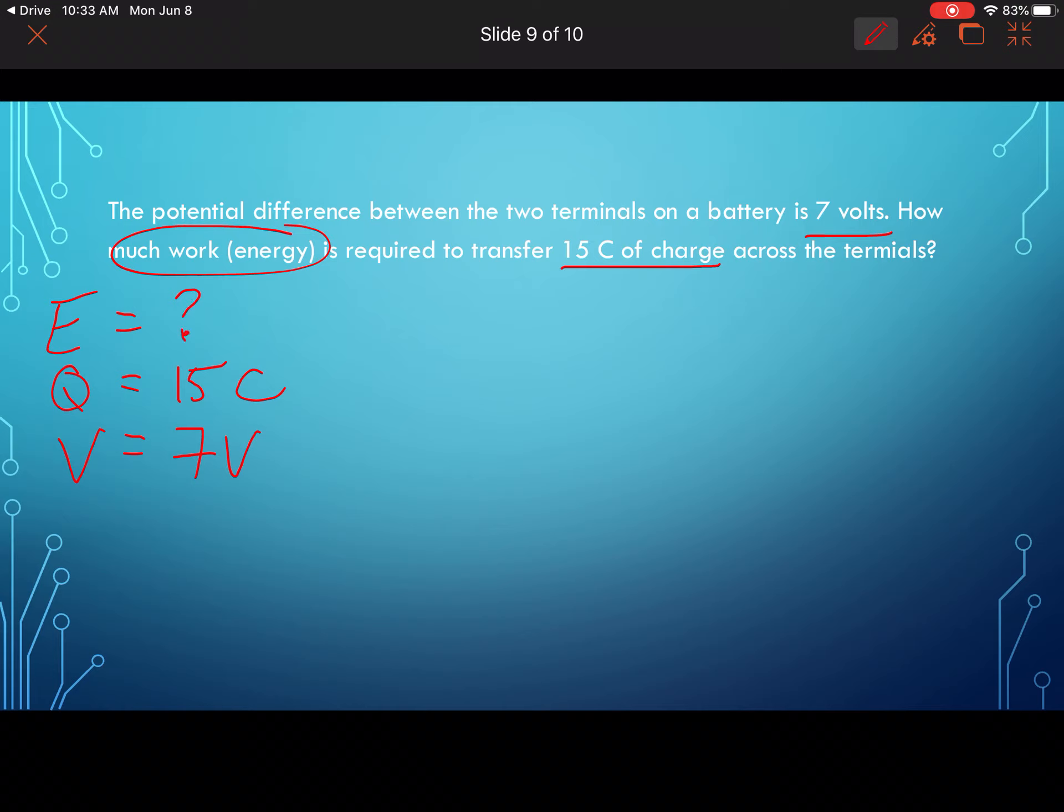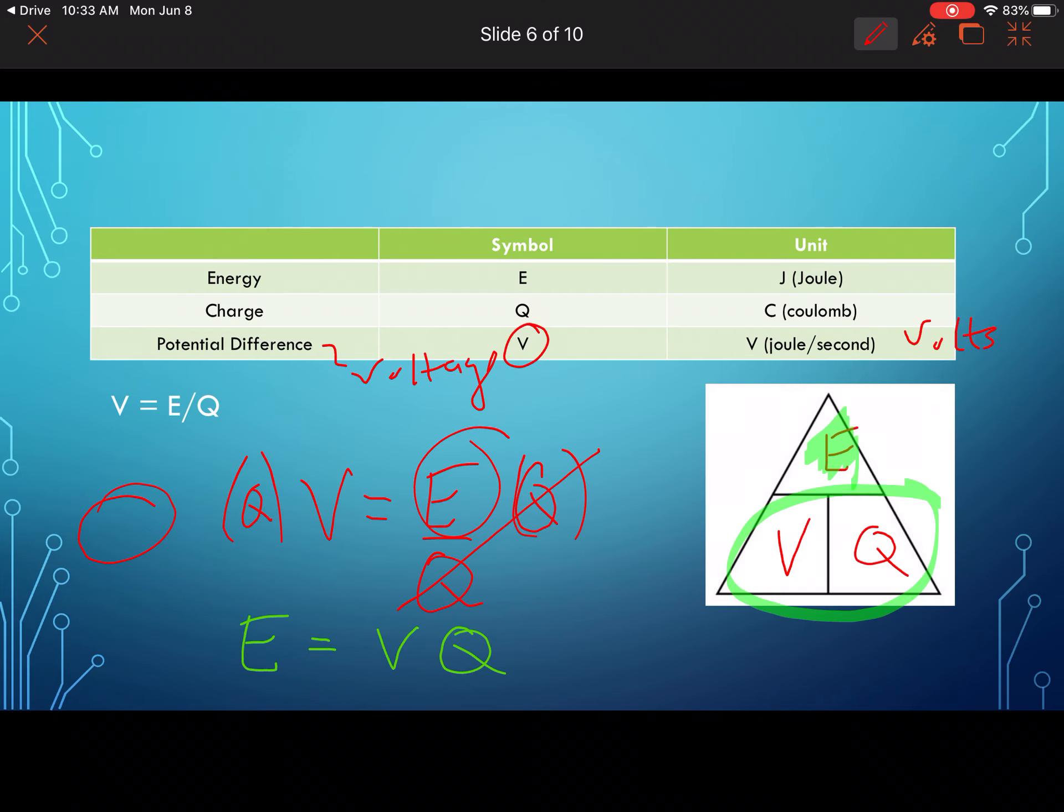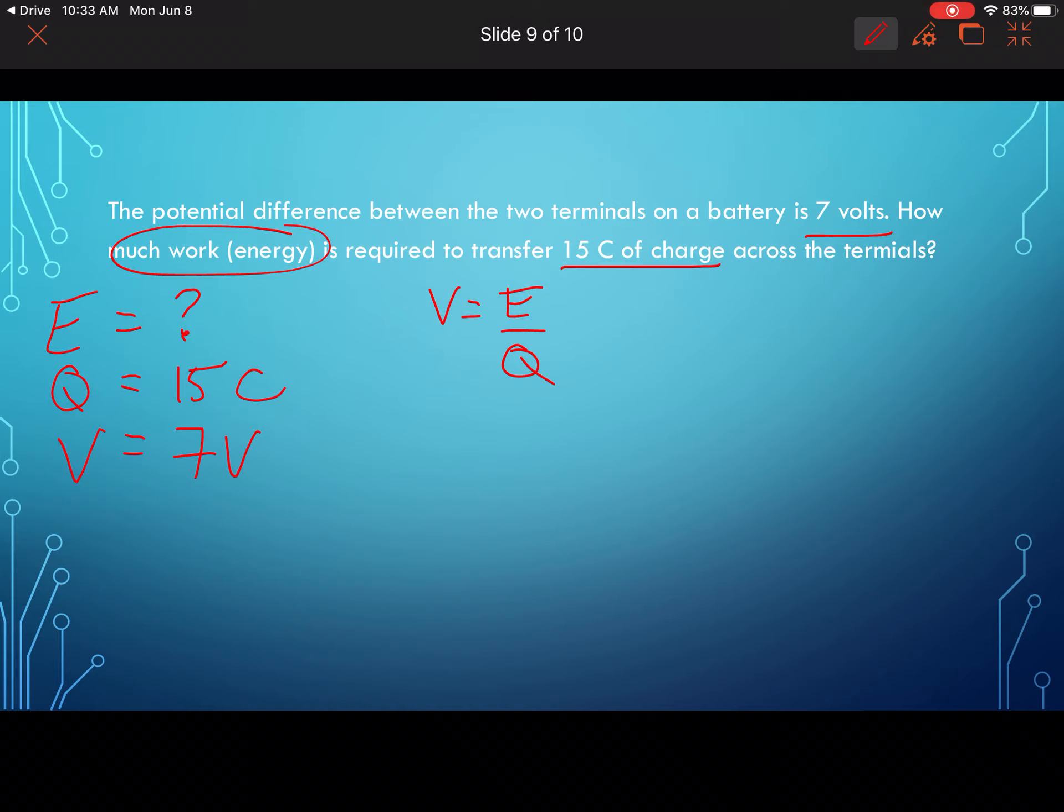So you would always write your equation out how we are used to seeing it normally: voltage equals E over Q. Now we're looking for E, so go back to our triangle. If we cover up the E, we're left with V times Q. So E equals V multiplied by Q, and so we have 7 volts multiplied by 15 coulombs of charge, and my answer is 105. And the unit for this is going to be joules. So 105 joules, and that's it. You're just filling in; you're just reading the question carefully. That's kind of going to be the hardest part for some of these.